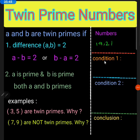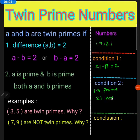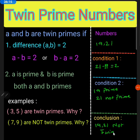Now consider another example: 19 and 21. Twenty-one minus nineteen equals two, so the first condition is satisfied. Nineteen is prime, but 21 is not prime. The conclusion is 19 and 21 are not twin primes.